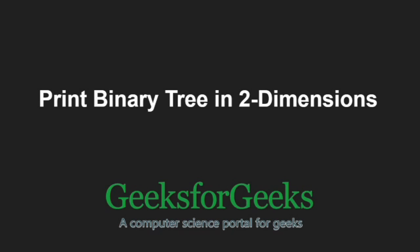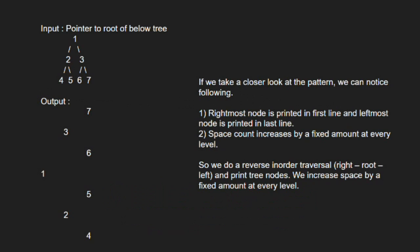Let us take an example. We can see that the rightmost node is printed in the first line and the leftmost node is printed in the last line. Also, the space count increases by a fixed amount at every level. So we do a reverse inorder traversal and print tree nodes.